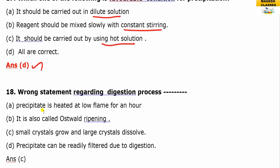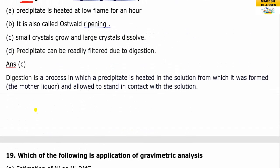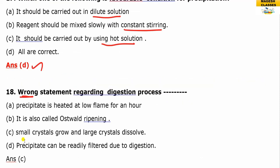Wrong statement regarding digestion: digestion is the process where the precipitate is kept in the solution from which it was formed and allowed to stand in contact with the solution. The answer is: small crystals grow and large crystals dissolve. It is also known as Ostwald ripening.